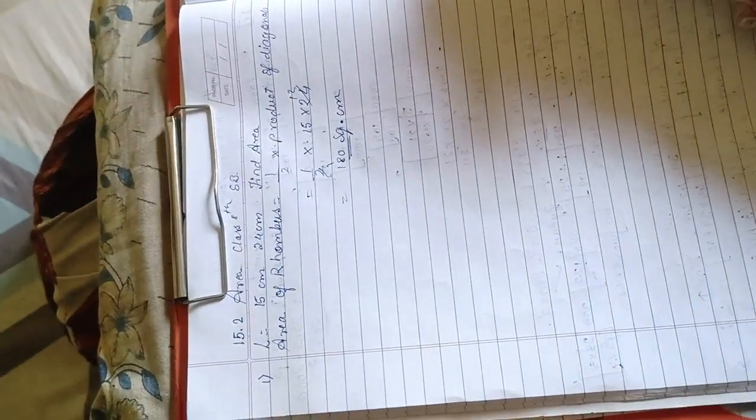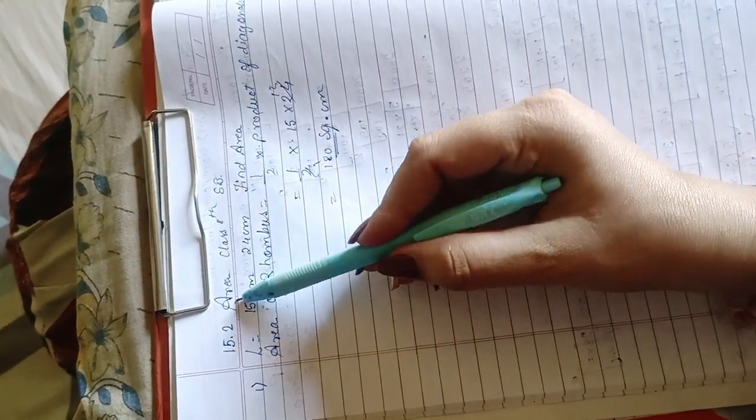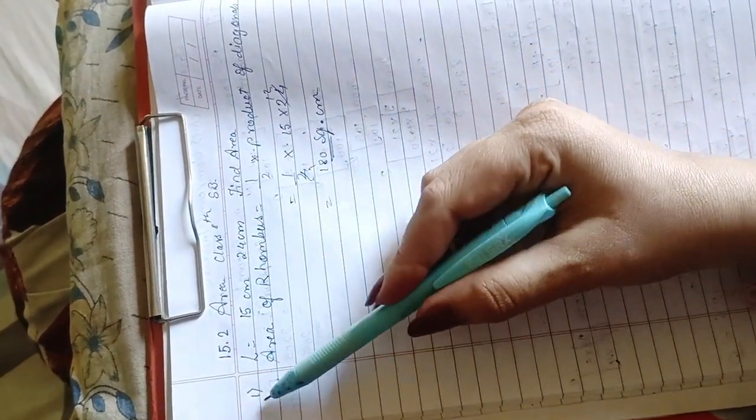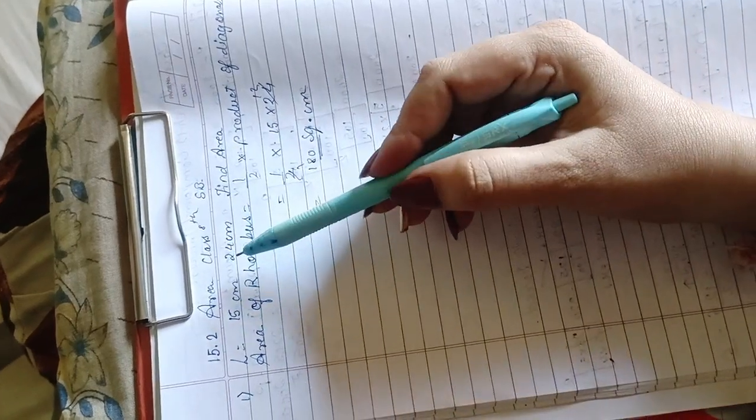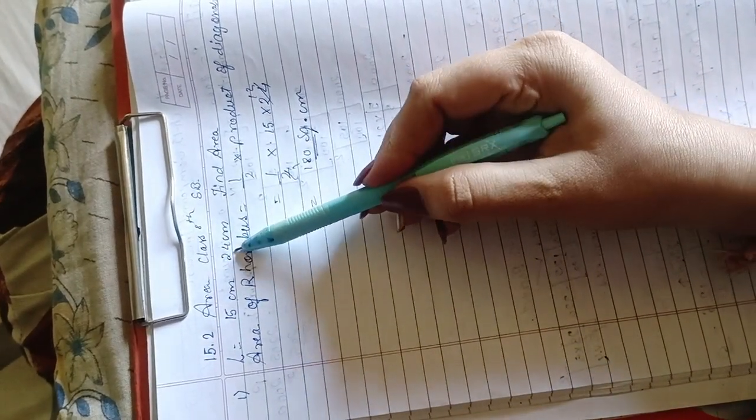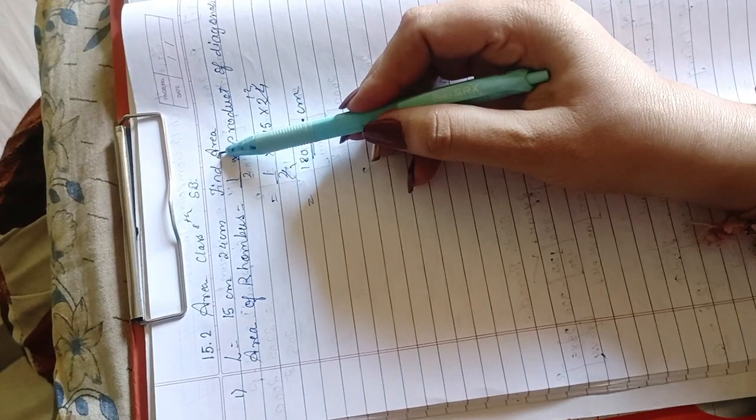Let us revise once again. 15.2, chapter area. First sum. Length is 15 and another length of the diagonal is 24. We have to find out area of rhombus.